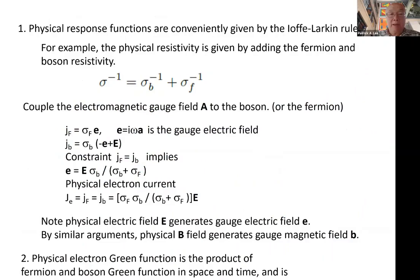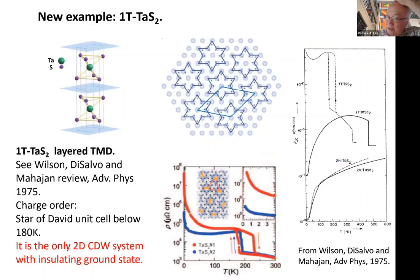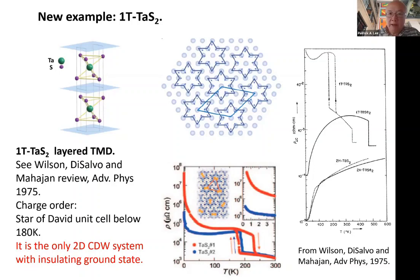Let me continue with a new example. There were several questions about confinement. Nagaosa has two books on the many-body problem, and I think he discusses the Polyakov argument there, so that's a good place to start reading about it. A second example is transition metal dichalcogenides.